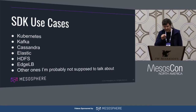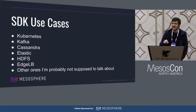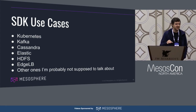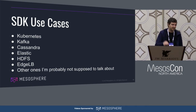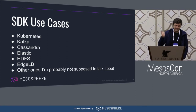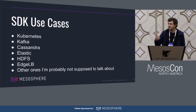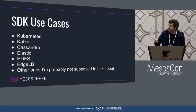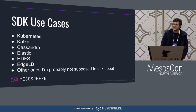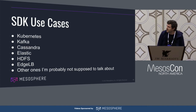So far we've built all these services using the SDK and they're all available in DCOS right now. Kubernetes was announced recently — that was built on the SDK. Kafka, Cassandra, Elastic, and HDFS have all been deployed using the SDK. Edge LB is something for enterprise DCOS that was also built on it, and there are a bunch of other ones too.